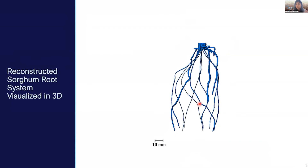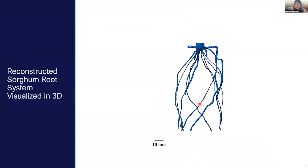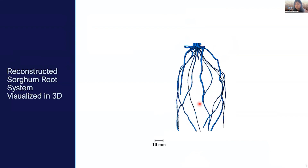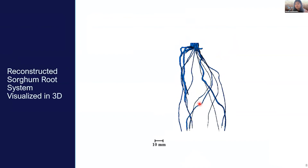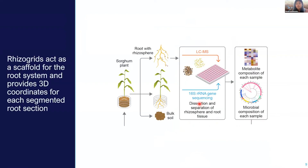This is the same root system from sorghum. Because we are using these riser grids, they are helping us to maintain the orientation of the roots as they act as a scaffold, and we are able to preserve the root system architecture. Once we have these root images, we can segment this root into pieces and use them either for extracting metabolites or for looking at microbial diversity through 16S sequencing, as well as any downstream analyses — transcriptomics, metabolomics, or proteomics. All of this information can be mapped back because we are preserving the coordinates.